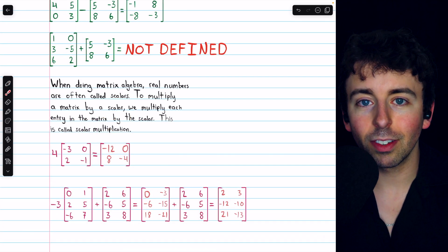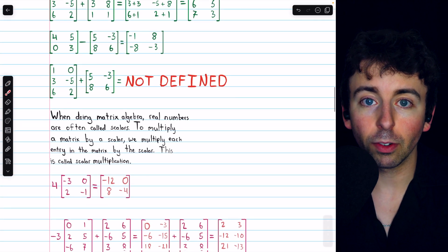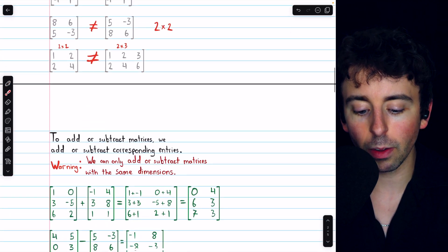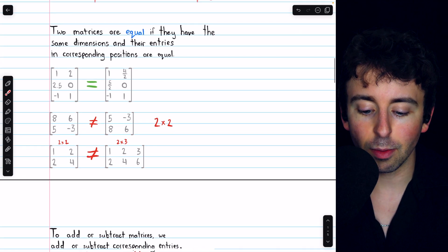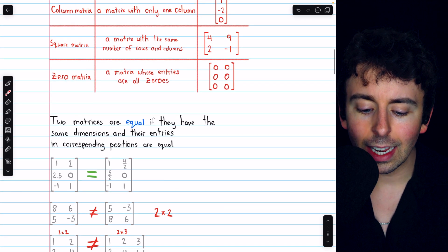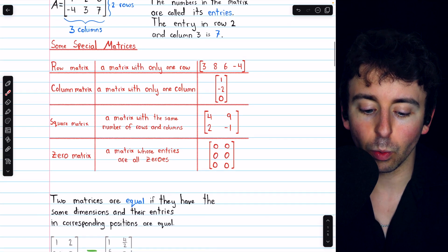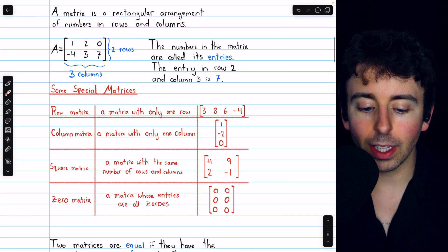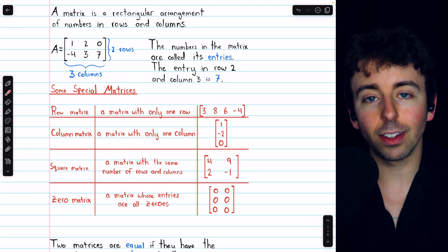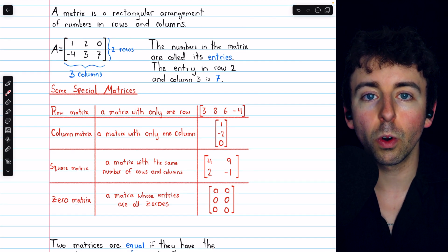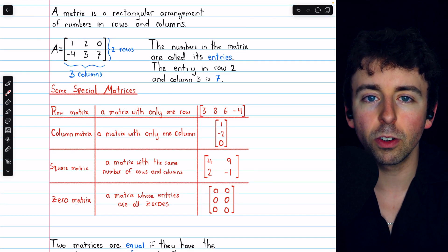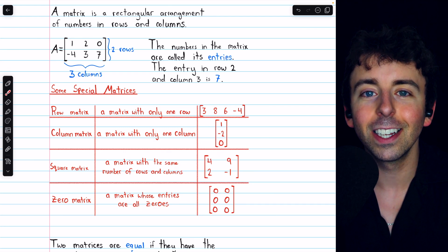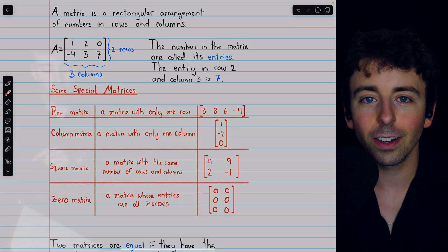So that's what a matrix is, some special types of matrices, how to tell if two matrices are equal, how to add and subtract them, and how to do scalar multiplication. Let me know in the comments if you have any questions, and be sure to check out the Algebra 2 course and Algebra 2 Exercises playlists in the description for more. Thanks for watching.